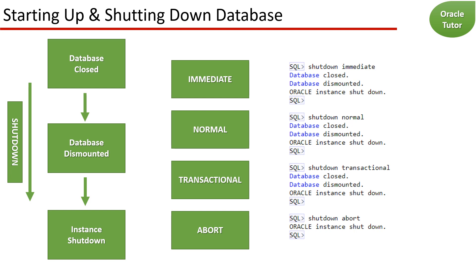The next startup requires instance recovery, which occurs automatically. It is important to note that the database becomes inconsistent when you perform an abort shutdown, whereas it stays consistent during the other shutdown modes. Also note that you need to recover the database instance after you perform an abort shutdown.